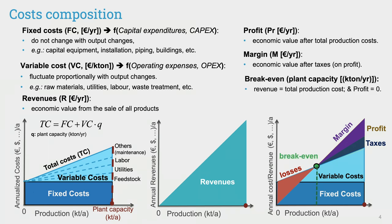And the production scale, where the total production costs are just equal to the revenues, is called the break-even point, where profit is zero.